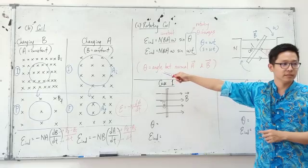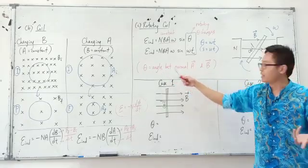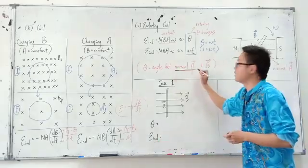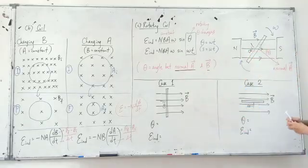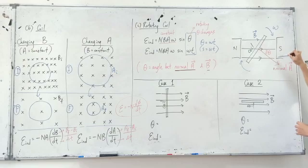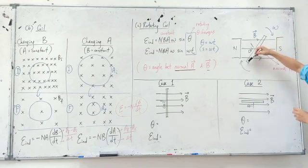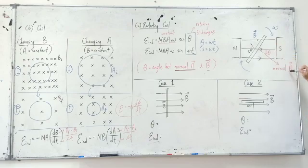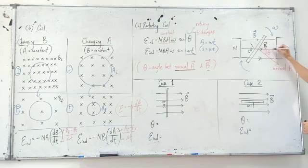How to find the angle theta? You must always draw the normal first — the normal to the area. Theta is always the angle between the normal and the magnetic field. So, draw the normal first, then the angle theta is between that normal and the magnetic field. This is the magnetic field, this is the normal — so angle theta is between the normal and the magnetic field.